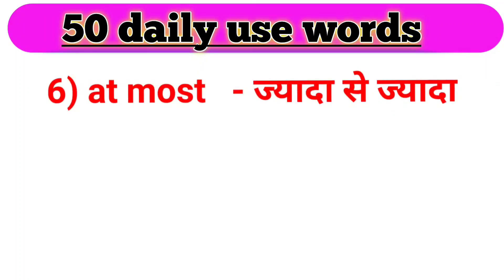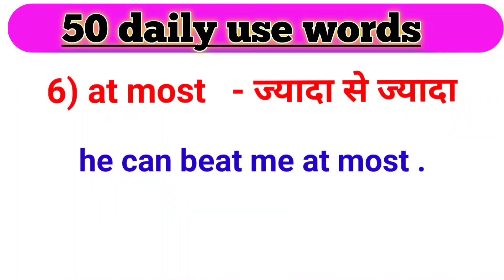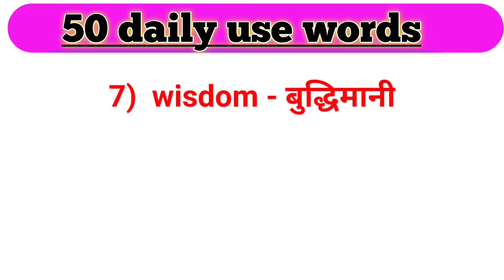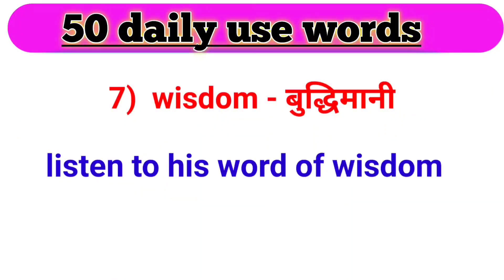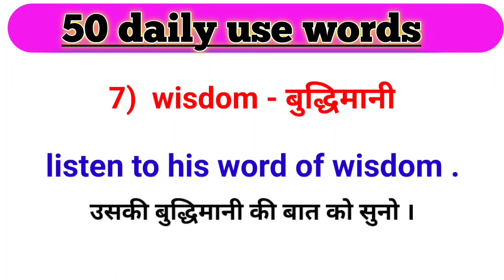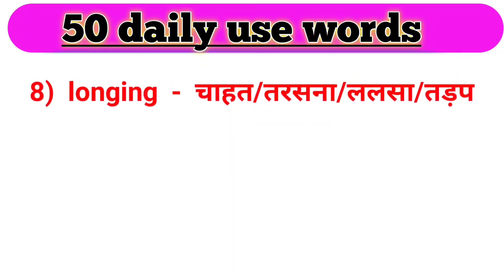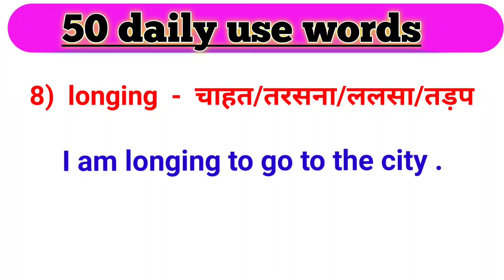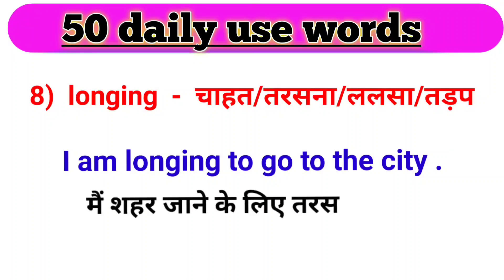At most — iska matlab hota hai zyaada se zyaada. For example: He can beat me at most. Woh zyaada se zyaada mujhe peet sakta hai. Next word, we have wisdom. Wisdom ka matlab hota hai buddhimani. For example: Listen to his word of wisdom. Uski buddhimani ki baat ko suno. Next word, we have longing. Longing ka matlab hota hai chaahat ya tarasna. For example: I am longing to go to the city. Main shehar jaane ke liye taras raha hoon.